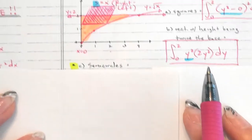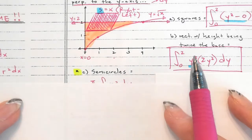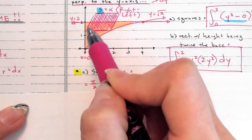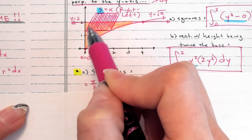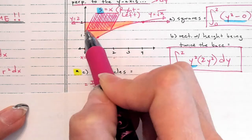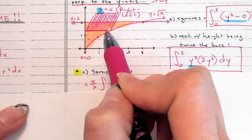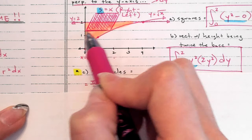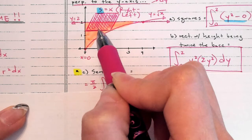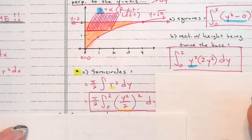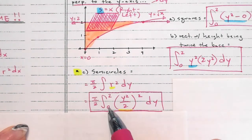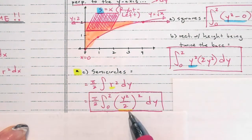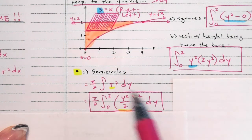Semicircles are a little tricky. Here's what you have to remember: if this is a semicircle, what spans left to right is the diameter, not the radius. So the radius is half that value. Whatever the side length is, R is half of that. That's why when I write it, I have π/2 out front, I integrate from 0 to 2, and my radius is (side)/2 — I take half the side length, and then I square it to get R².